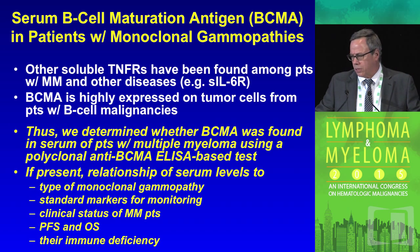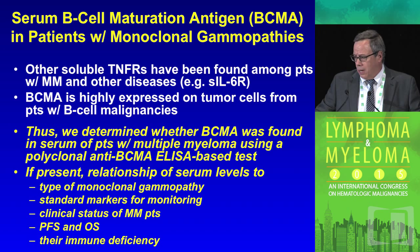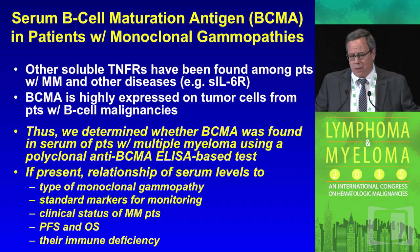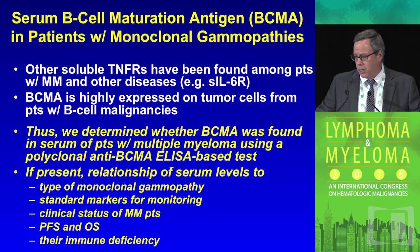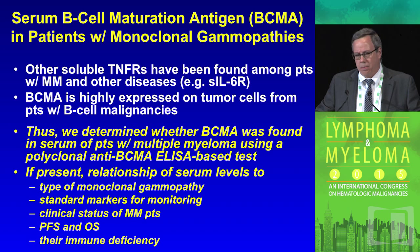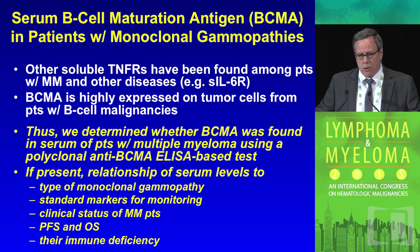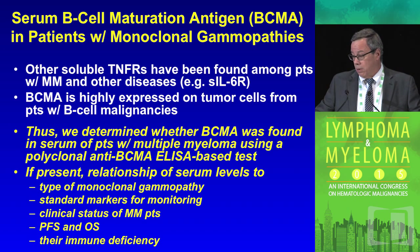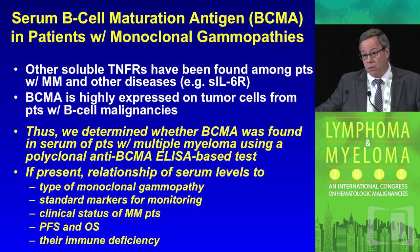We know that other soluble TNF receptors have been found among patients with myeloma and other disorders, including the soluble IL-6 receptor. We also know that BCMA is highly expressed on the surface of tumor cells from a variety of B cell malignancies. We therefore determined whether this receptor was solubilized and found in the serum of patients with myeloma using a polyclonal anti-BCMA ELISA-based test from R&D Systems. If it was present, we determined its relationship to the type of monoclonal gammopathy — MGUS versus smoldering myeloma versus active disease — and tracked it among many patients to determine whether it was a good monitoring device, whether it correlated with clinical status, and whether it predicted outcome based on baseline levels. We also correlated it with PFS and OS, and you'll see interesting data on how this has a direct relationship to one of the hallmarks of myeloma: immune deficiency.